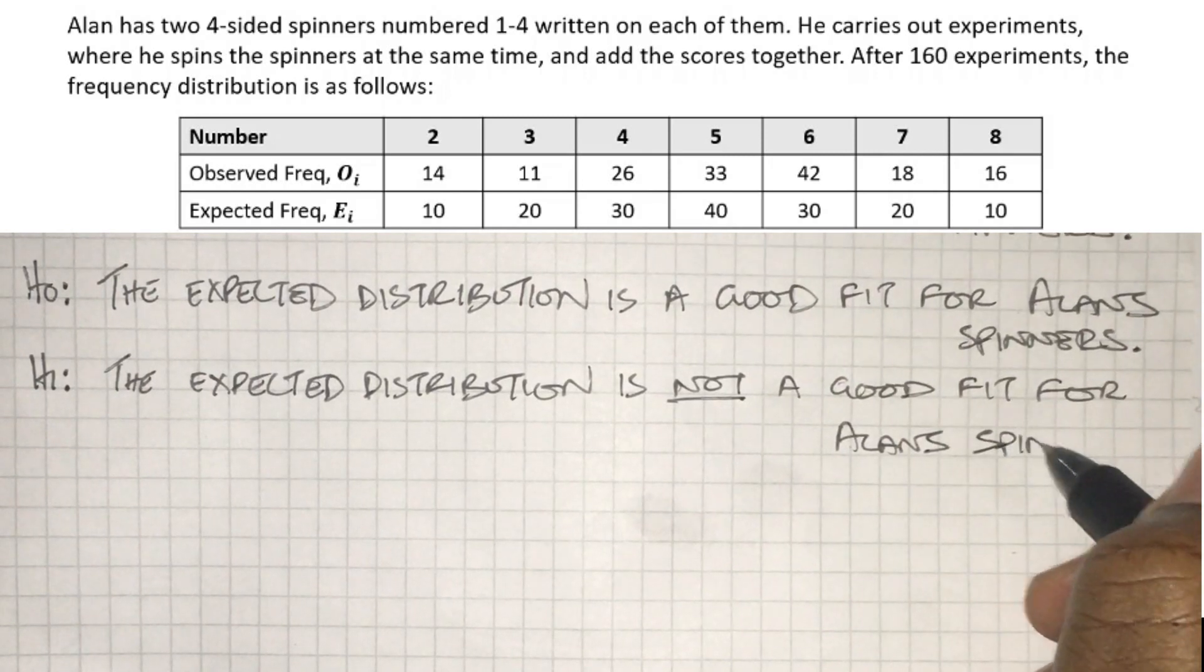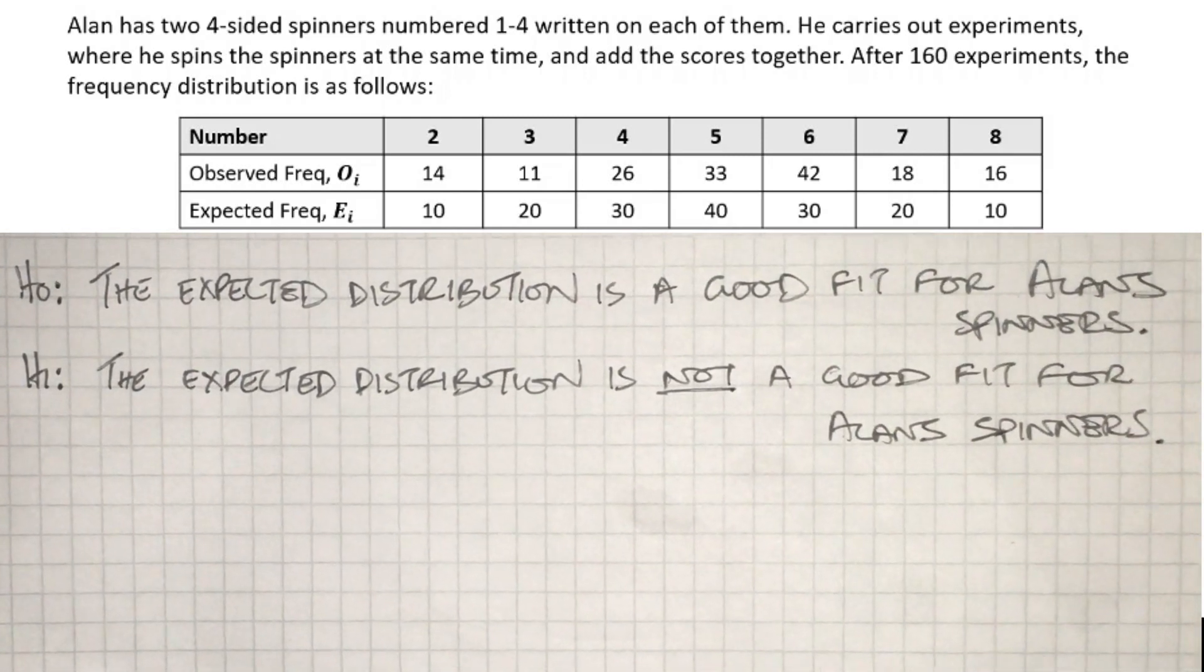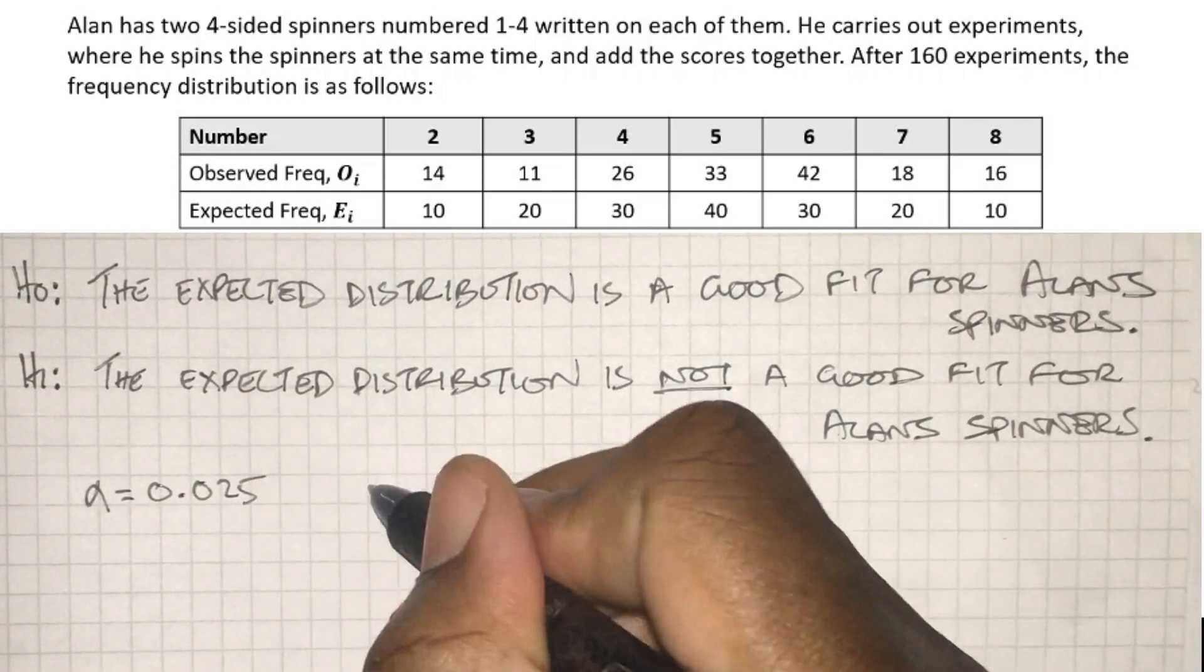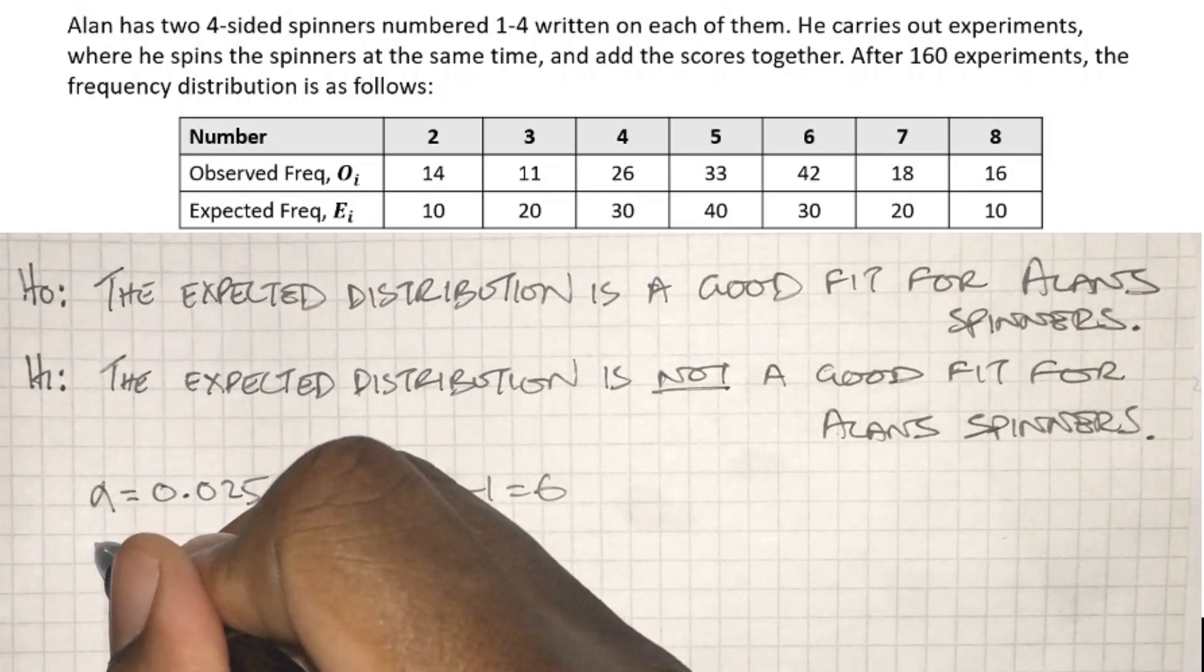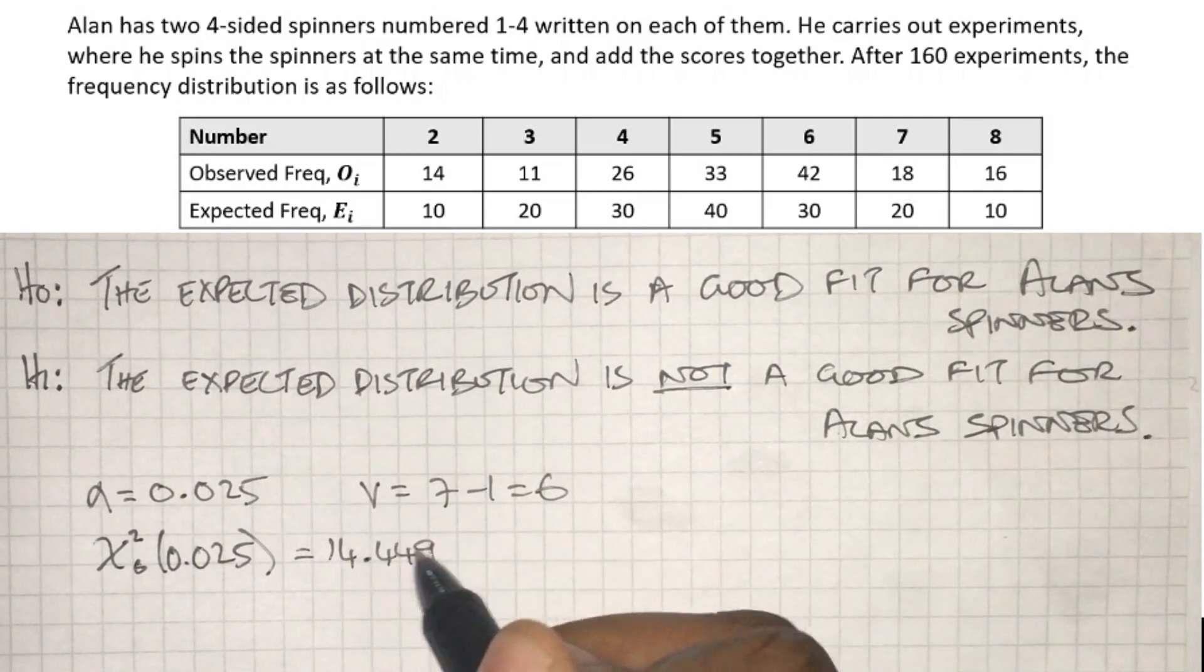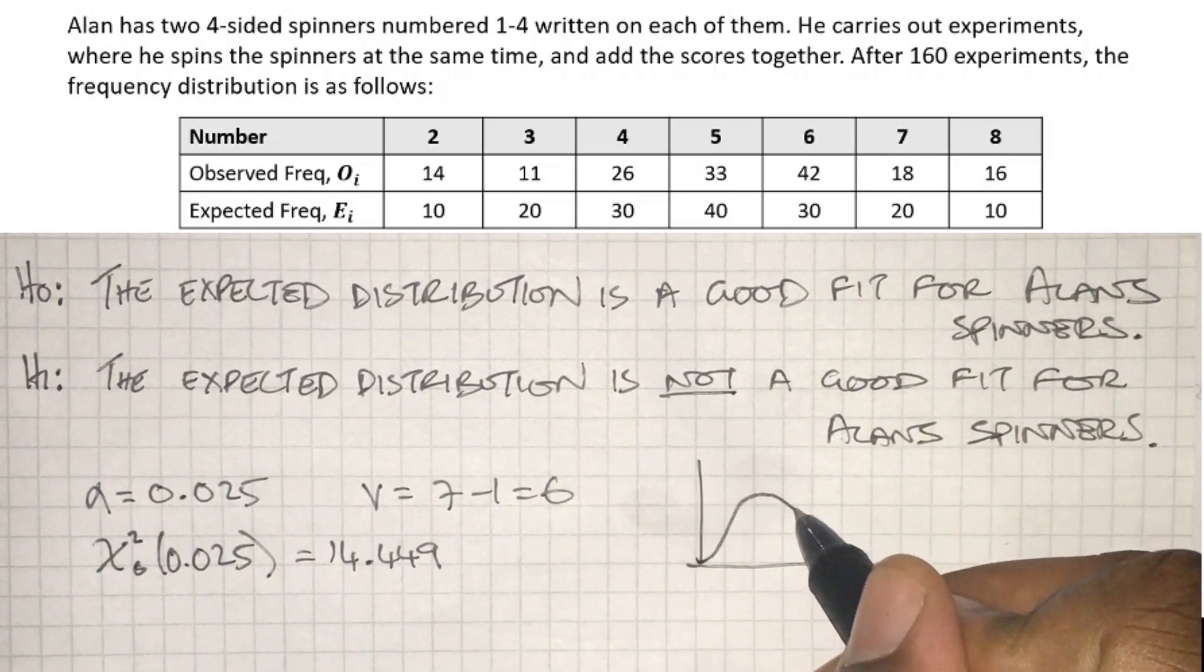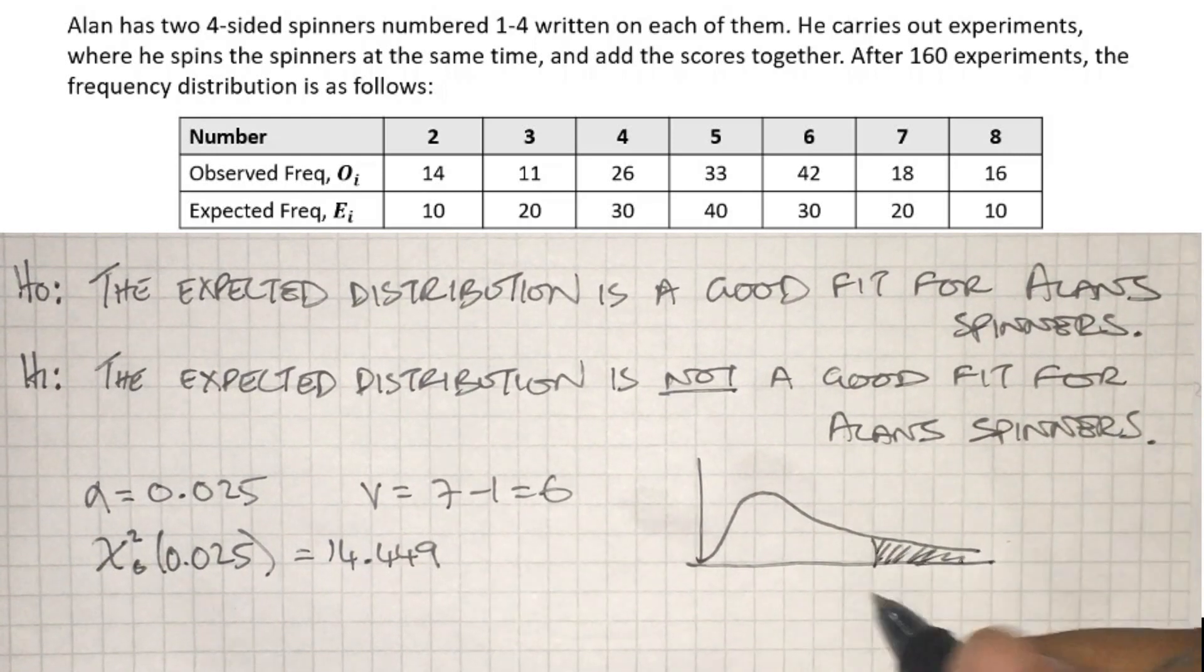I'm going to state the significance level, we've got 2.5% today. The degrees of freedom - all of the expected values are above 5, so I can just go ahead and do 7 minus 1 to get 6. The critical value this time round is quite large, 14.449, so I'm going to put that on the diagram.